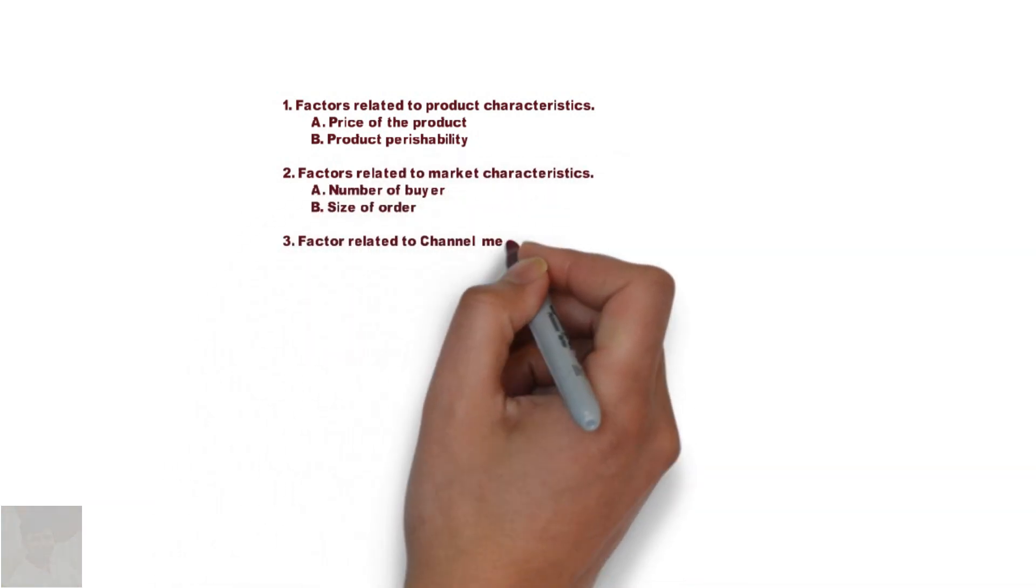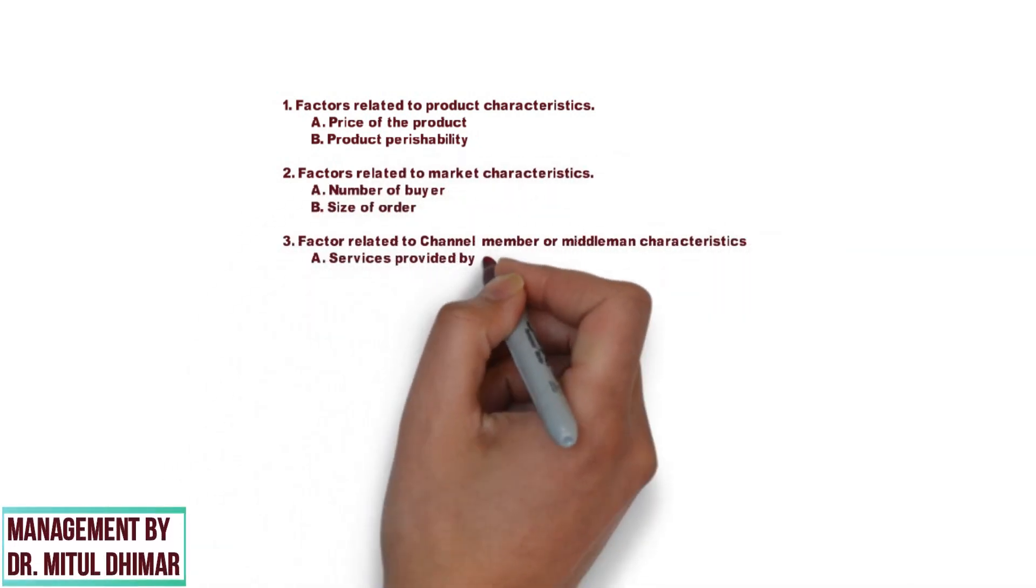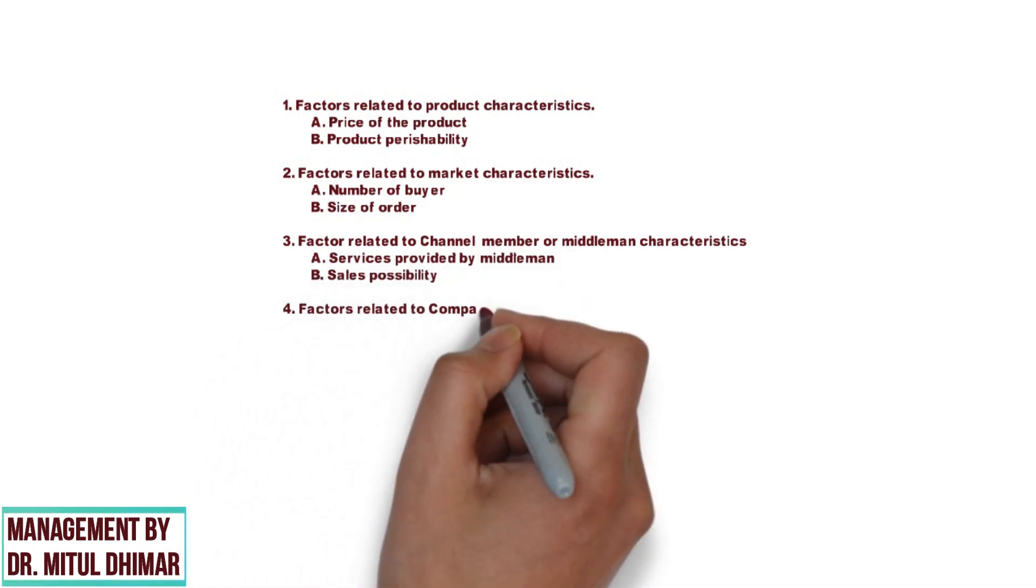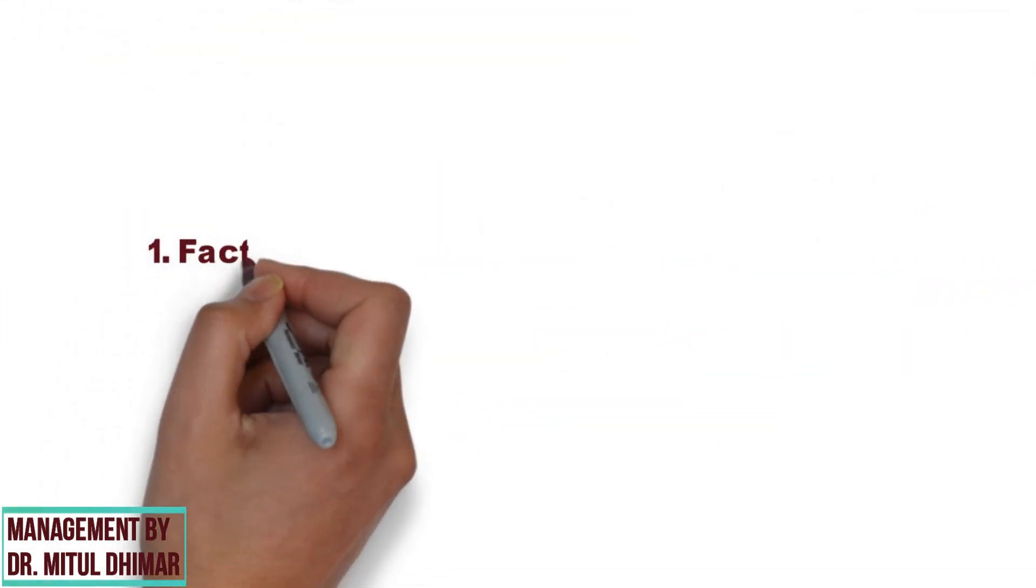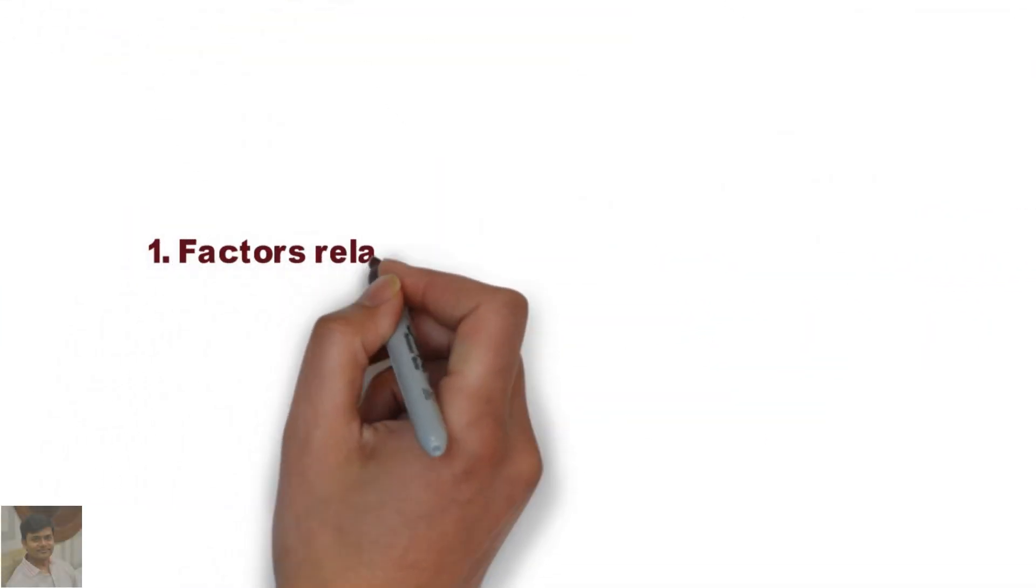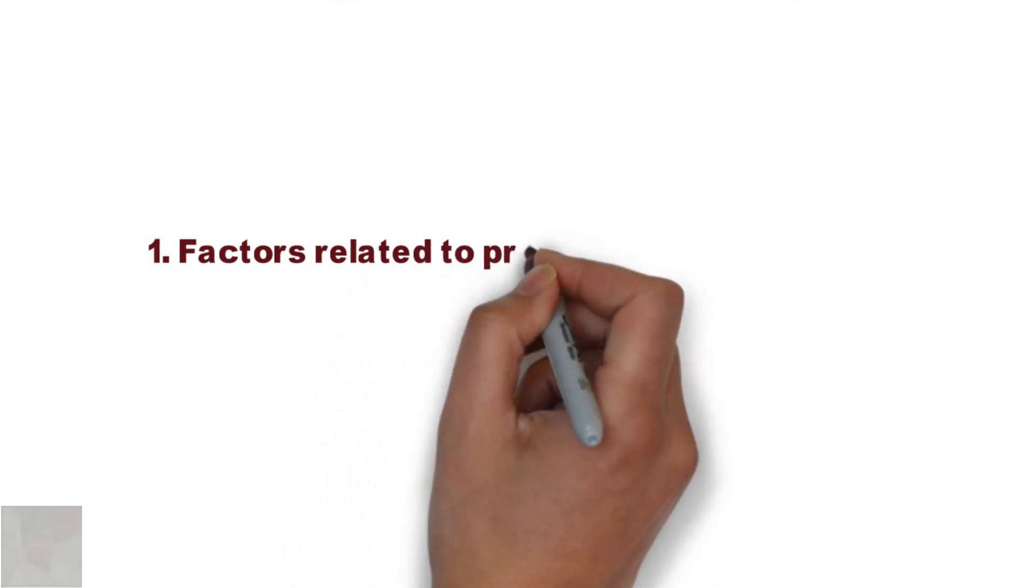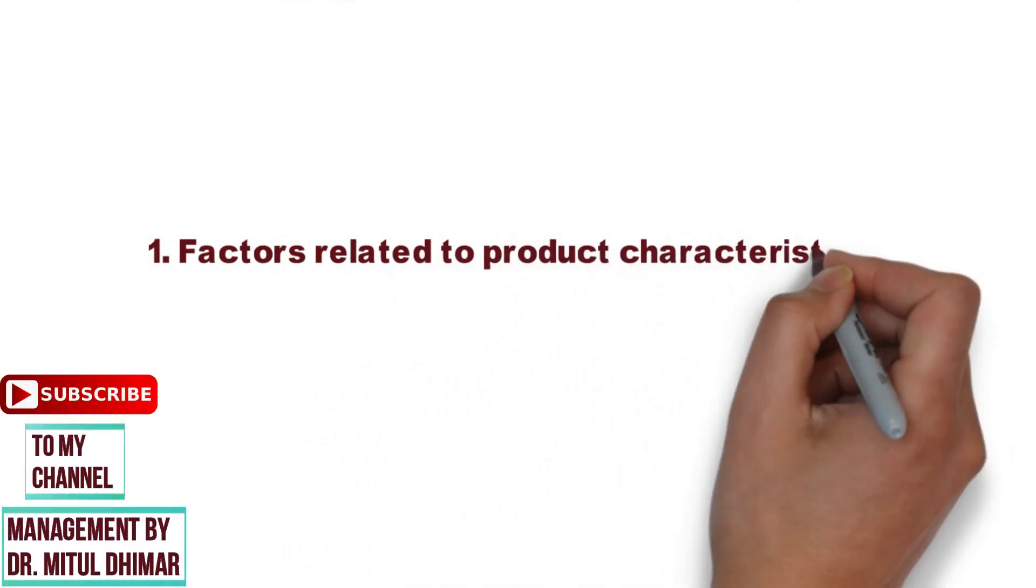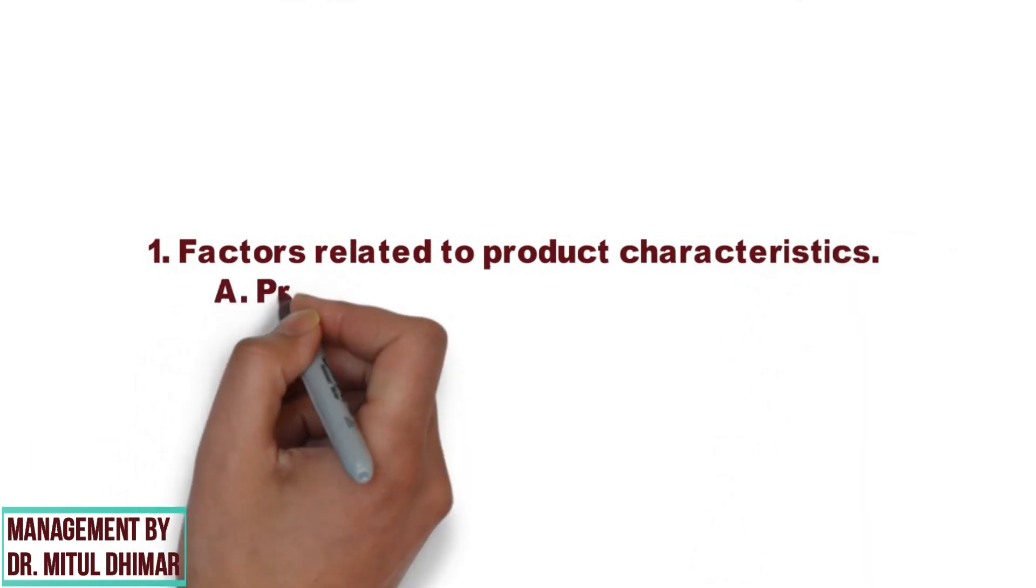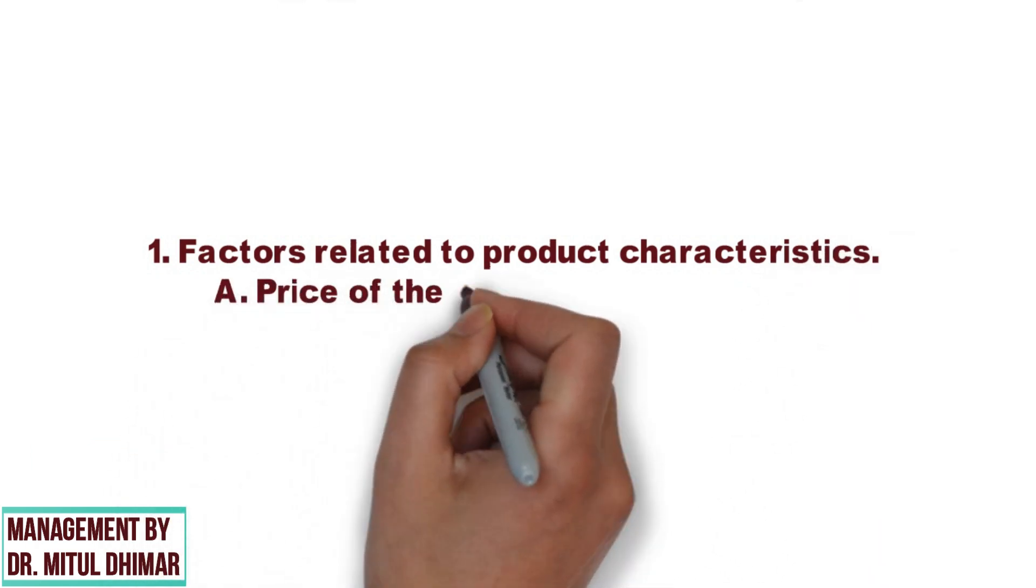Please watch my video till end because you will find different examples in each and every point we are going to study today. Factor number one is product characteristics. Product characteristics such as type, use, form, etc. play an important role in design and selection of the channel.